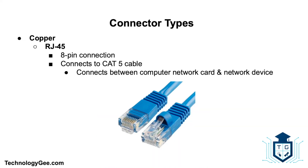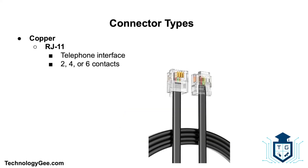Now let's talk about connector types. The RJ45 connector is an eight-pin connection used for Ethernet network adapters. It resembles the RJ11 connector used for telephones, and most commonly connects to the end of a Cat5 cable, which connects between a computer network card and a network device such as a router.